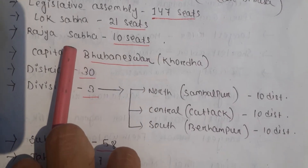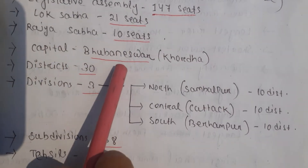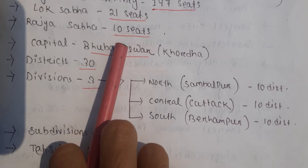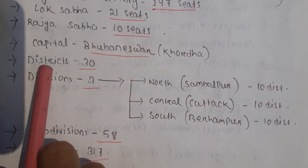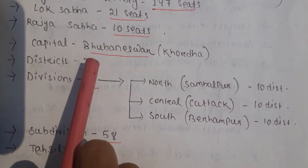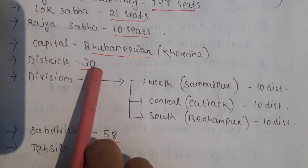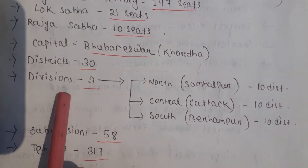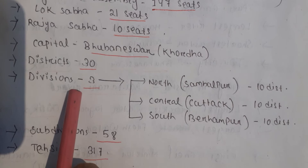The capital of Odisha is Bhubaneswar, located in Khordha district. Odisha has a total of 30 districts and 3 divisions.